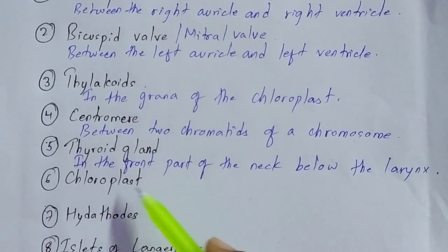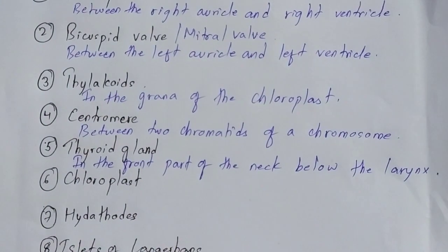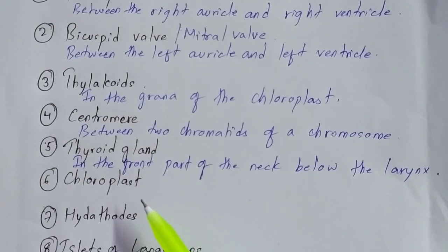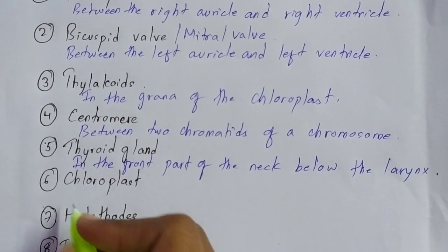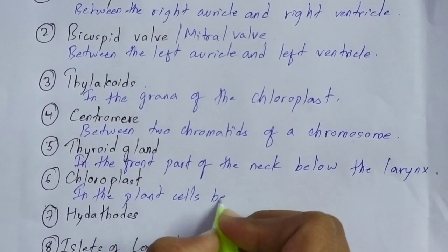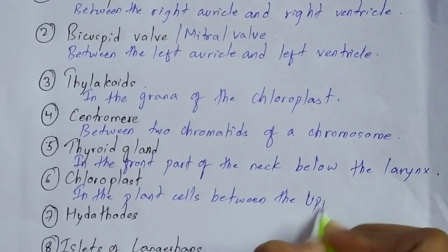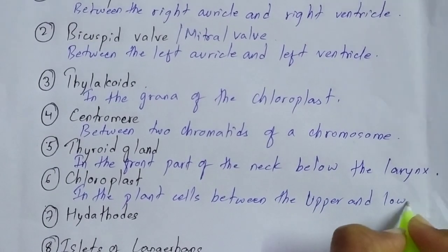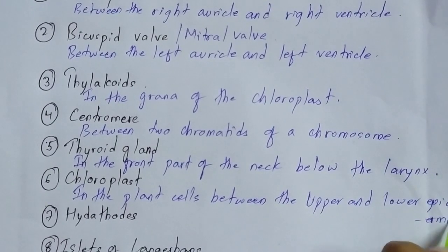The next one is chloroplast. You have to give the exact location of chloroplast. You may know it is found in leaves, but since you have to give the exact location, you cannot just write 'leaves.' You have to write: in the plant cells, between the upper and lower epidermis of the leaves.